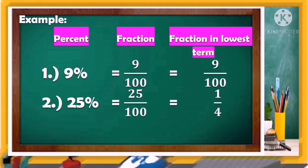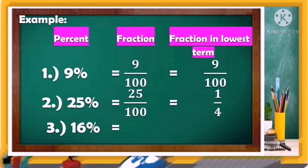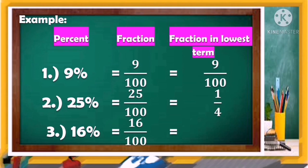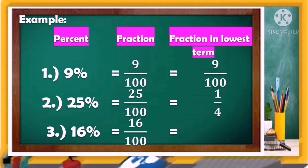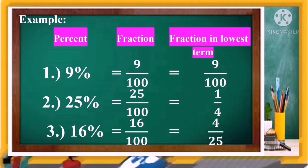How about number three? 16 percent — remove the symbol and use 16 as your numerator and 100 as your denominator. Reduced to lowest terms, the final answer is 4 over 25.